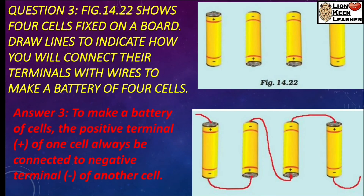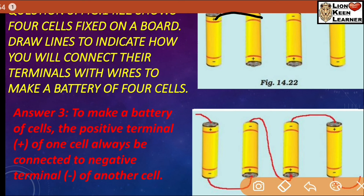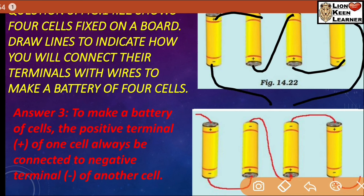Question number three: Figure 14.22 shows four cells fixed on a board. Draw line to indicate how you will connect their terminals with wire to make a battery of four cells. Answer: To make a battery of cells, the positive terminal of one cell always be connected to negative terminal of another cell. हम एक का positive, दूसरे के negative से जोड़ेंगे. यहाँ positive negative और यहाँ पर positive negative. इसके बीच में कोई भी circuit लगाएं तो वो move करेगी.